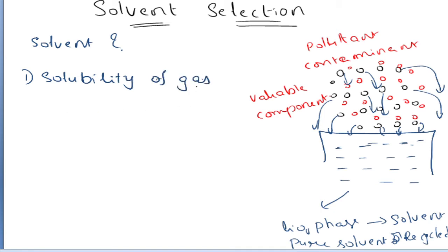The solute — the gas or solute component — your solvent should have high solubility towards this solute component. That means it should have the capability to absorb the solute component, or it should have high affinity towards the solute component, so that it can attract the solute particles from the gaseous phase to the liquid phase. Suppose you have a number of solvents A, B, C, D which have the same solubility values.